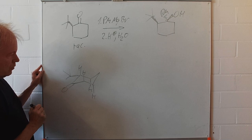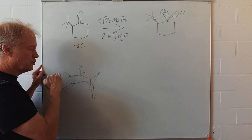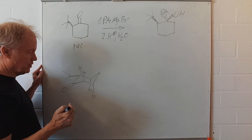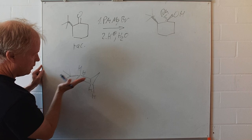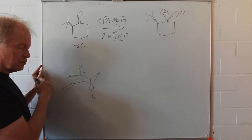It should be located of course on an equatorial position avoiding the one three-diaxial interaction. And as you see, here we have the ring and approximately because it's an equatorial position the tertiary butyl group is on the side of the ring and not above the ring.